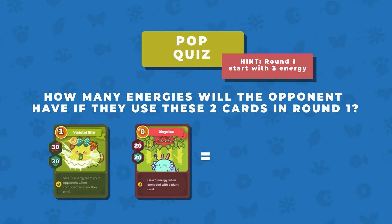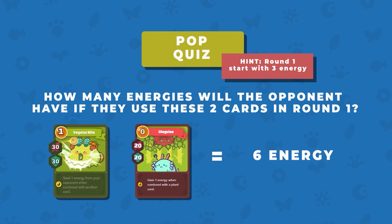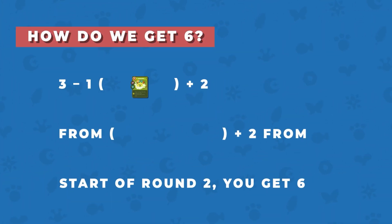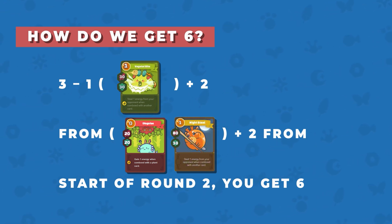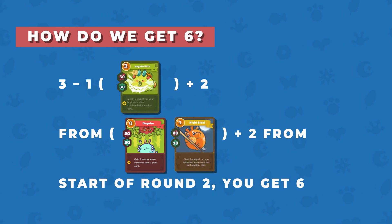That's right — they'll end up with 6 energies with just these 2 cards. How do we get 6? Here's the calculation: 3 minus 1 from Vegetal Bite, plus 2 from stolen energy and energy gained from Disguise, plus 2 from the start of round 2. You get 6.